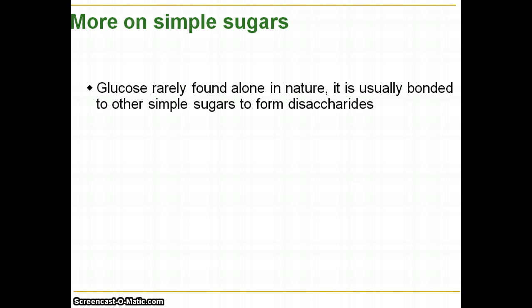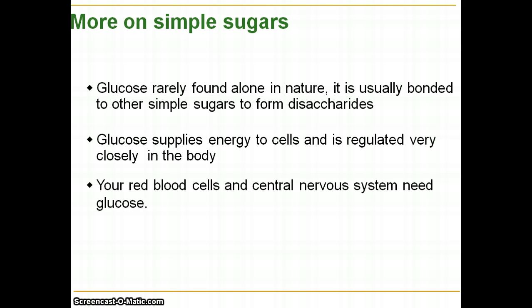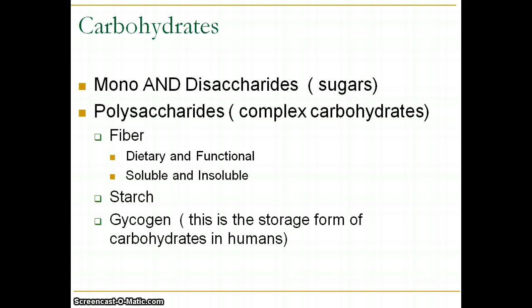When we talk about glucose — your very important molecule — it's rarely found alone in nature. It's usually bonded with other simple sugars to form disaccharides. Eventually, in the GI tract it's digested and separated. Glucose is so important because it provides energy for your cells, including and especially your brain and central nervous system.